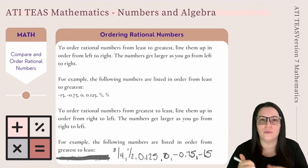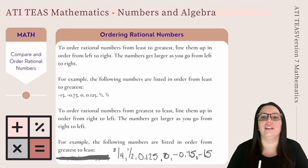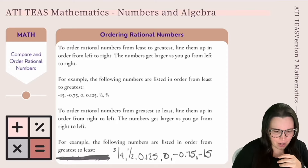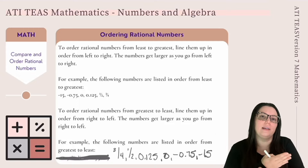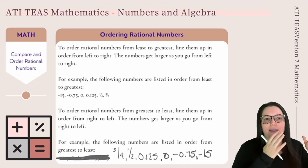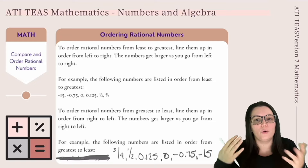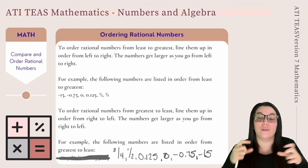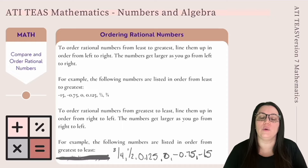To order rational numbers from greatest to least, we reverse it — lining them up from right to left, so the larger numbers are on the left: 3/4, 1/2, 0.125, 0, −0.75, −15. When ordering negative numbers, remember the more negative the number, the lesser its value. There is also the concept that the absolute value of negative numbers is always less than the absolute value of positive numbers.